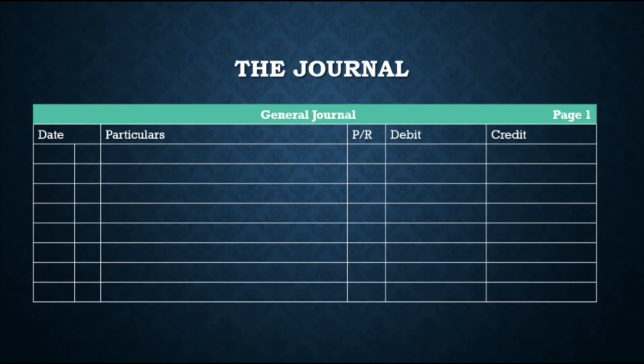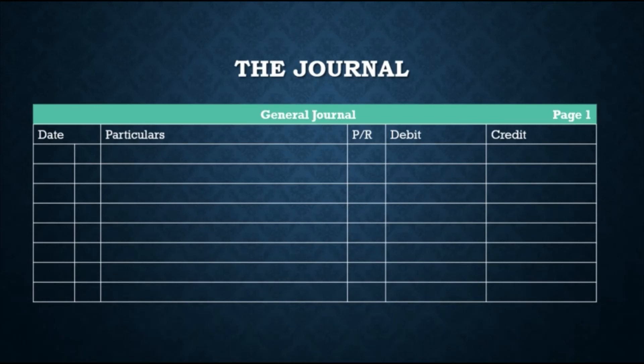After learning the rules of debit and credit, we are ready for journalizing entries. Businesses initially record transactions in the journal in chronological order — the order in which they occur — which is why the journal is also called the book of original entry. For each transaction, the journal shows the debit and credit effects on specific accounts. There are different kinds of journals, but the most basic form is the general journal, which typically has spaces for dates, account titles and explanations, references, and two amount columns for debit and credit. The process of entering transactions in the journal is called journalizing. A complete journal entry consists of the date of the transaction, the accounts and amounts to be debited and credited, and a brief explanation of the transaction.